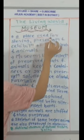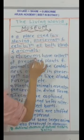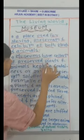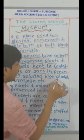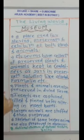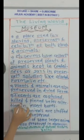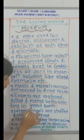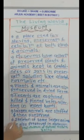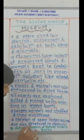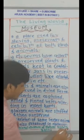Museum: a place used for storing, preservation, and exhibition of both plants and animals. Museums have collections of preserved plants and animals kept in containers or jars in preservation solutions like alcohol, formalin, etc. Plants and animals are also preserved in dried forms. Insects are captured, killed, and pinned before collecting in insect boxes. Larger animals are stuffed and then preserved. Skeletons of some larger animals are also preserved in museums. For example, National Museum of Natural History, Delhi.